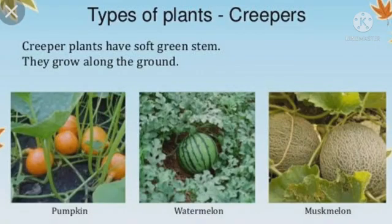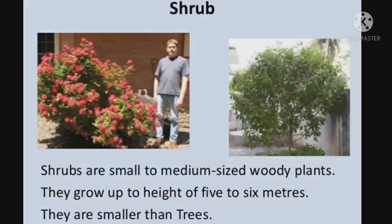Another type of plant is creepers. Creeper plants have soft green stems. They always grow along the ground. Some examples of creepers are pumpkin, watermelon, and muskmelon. They grow along the ground.